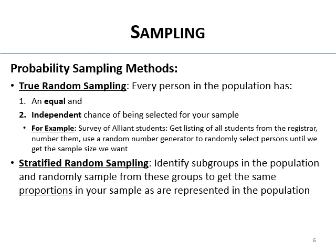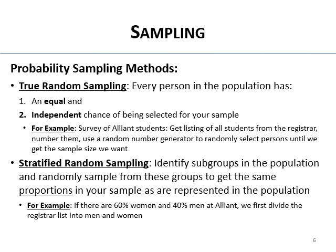Then there's stratified random sampling. This is when you identify subgroups in the population and randomly sample from these groups to get the same proportions in your sample as there are in the population.